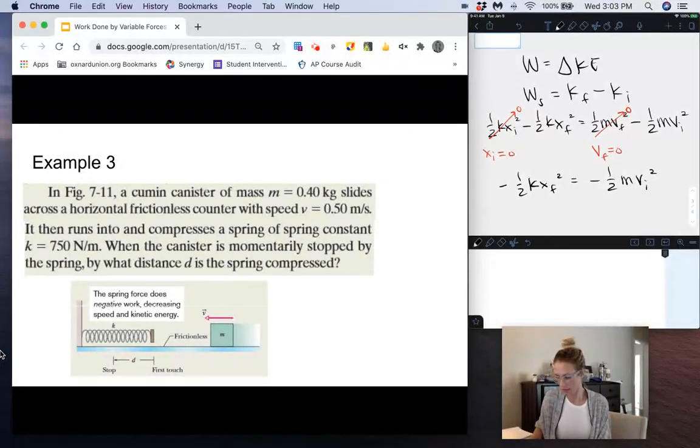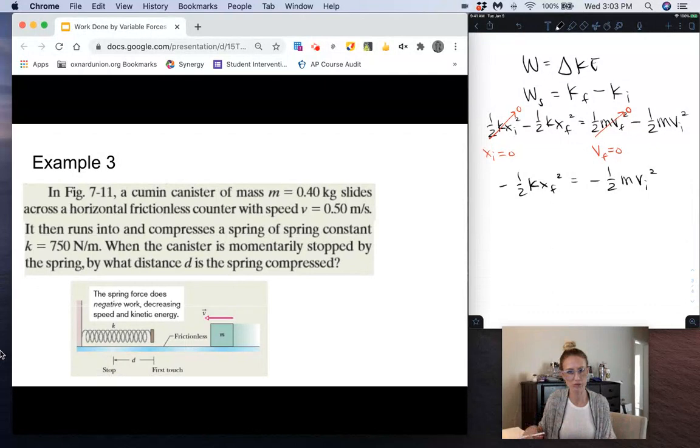Here we can cancel out both the negatives, just multiply through by negative one, and we can also cancel out that one-half. So we end up getting kx final squared equals mv initial squared.